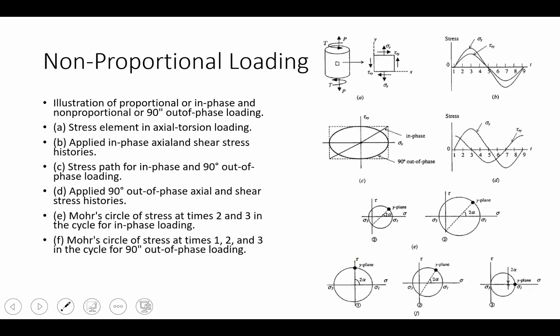Now let's go into non-proportional loading. Non-proportional loading, as we learned in the previous video, is the relationship between principal stresses within a fatigue test. The example would be sigma-2 over sigma-1, and sigma-3 over sigma-2 — those are proportions. Proportional loading is when those ratios remain fixed with time, meaning the distance between sigma-2 and sigma-1 remains the same. Non-proportional loading is where that's not true — where sigma-1 and sigma-2 are out of phase and so they change with time.